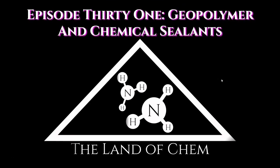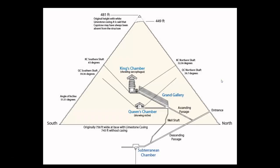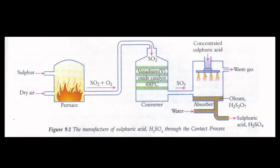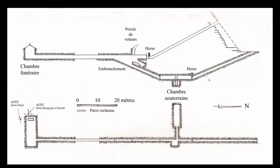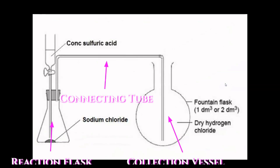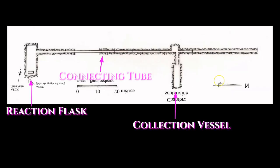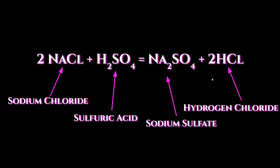In my previous series of episodes regarding the function of the Great Pyramid and Central Pyramids of Giza, I went into extensive detail explaining how both structures were utilized to produce two different acidic solutions. The Great Pyramid was utilized to produce a dilute solution of sulfuric acid, and the Central Pyramid was utilized to produce a dilute solution of hydrochloric acid.